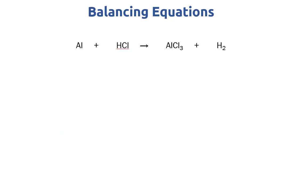In this example we have aluminum reacting with HCl to make AlCl3 plus H2. We're going to practice balancing, but also address a common problem that comes up when we have diatomic molecules — like H2, N2, O2. There's often a problem involving fractions with these, and we're going to tackle that. Once again, we start by counting everything on both sides.